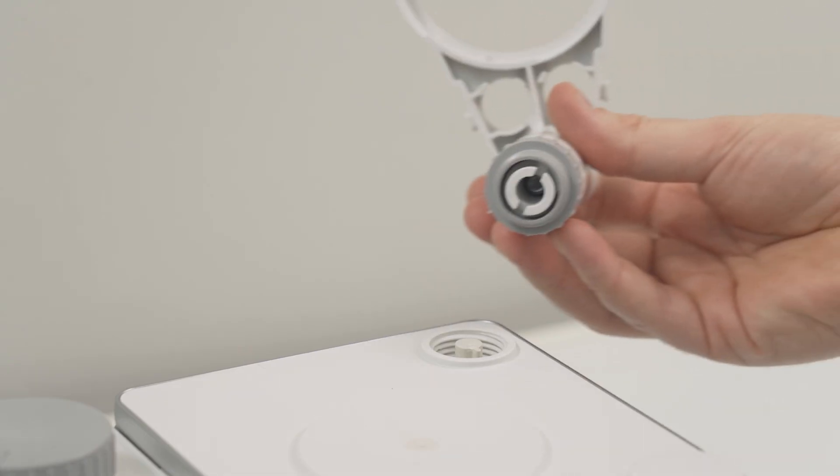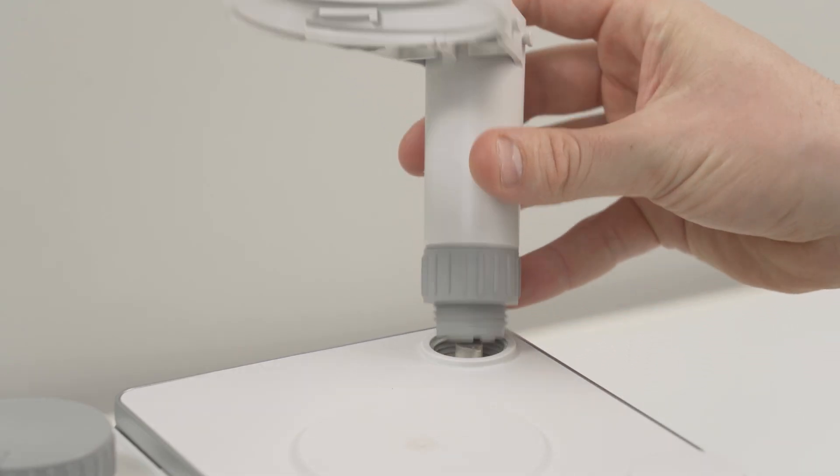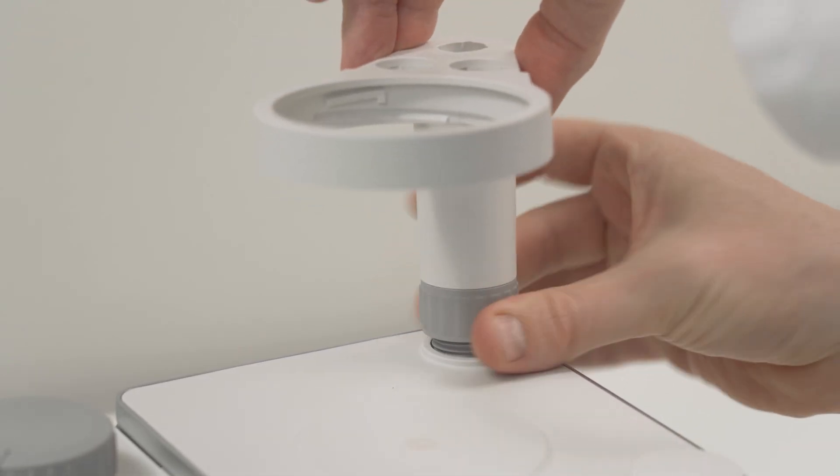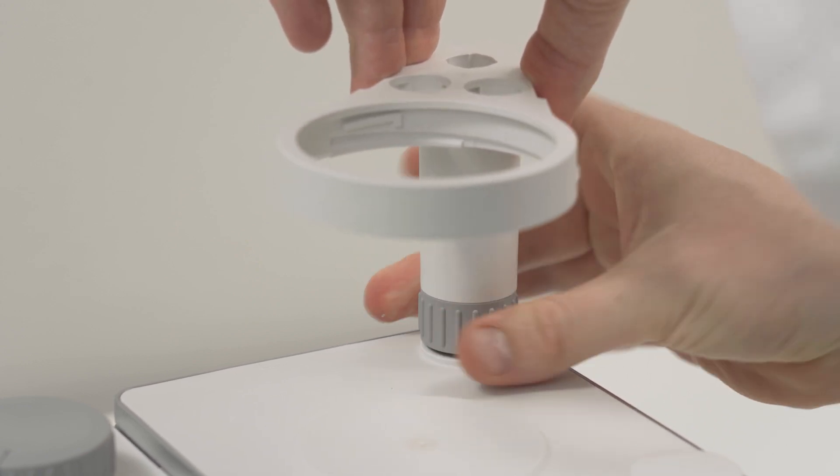Fix the titration arm to the main unit and attach the grey rubber strap. Later on we will use the strap to fix the sensor cable.